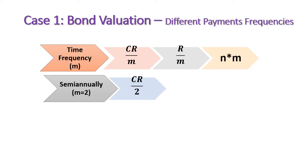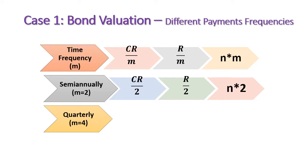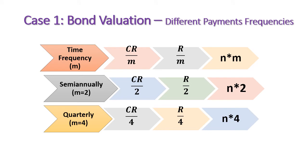Consequently, we divide the annual coupon rate by two and divide the required rate or discount rate by two, and multiply the number of years by two. In case of quarterly coupon payments, the number of quarters per year is four, so we divide the annual interest rate by four, the discount rate by four, and multiply number of years by four.